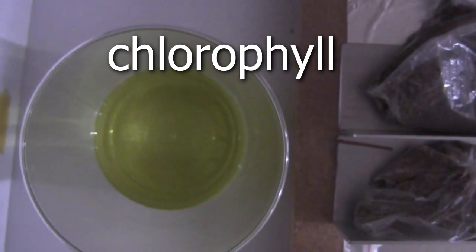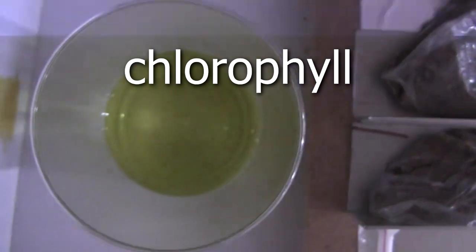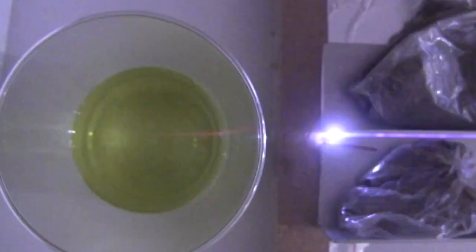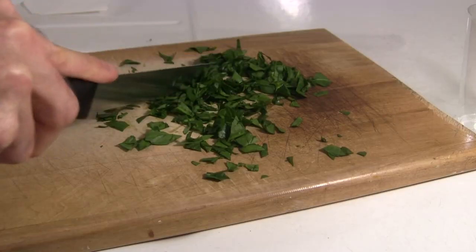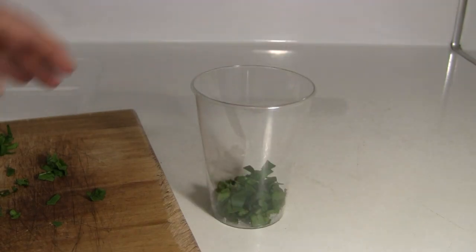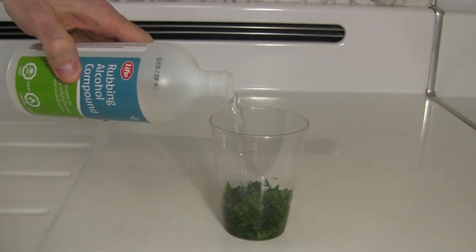What I was really excited to try was chlorophyll, which absorbs ultraviolet light and re-emits a red color. To get chlorophyll I chopped up some nice green spinach. I put it in a plastic cup and poured in some rubbing alcohol.